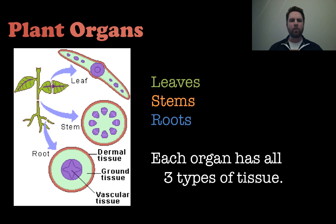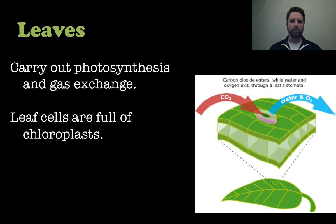Plant organs would be things like leaves, stems, and roots, and each one of these organs has all three types of tissue: vascular, ground, and dermal tissue.